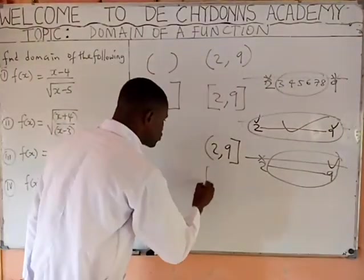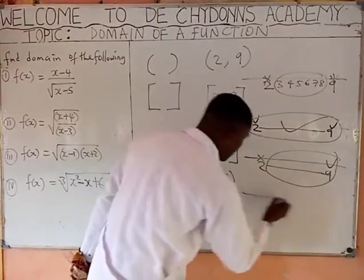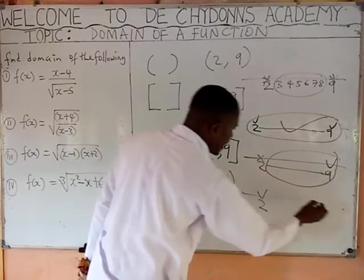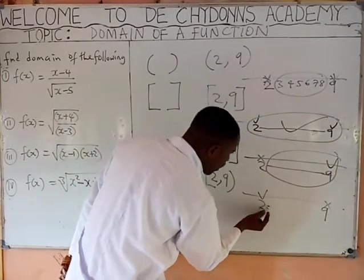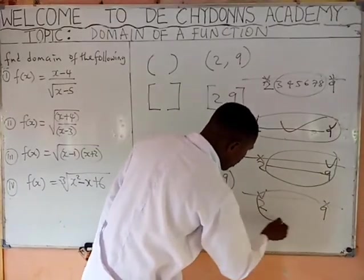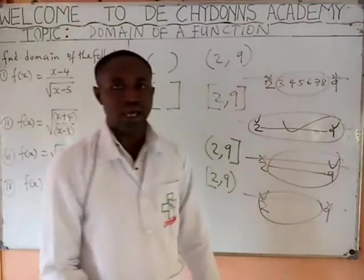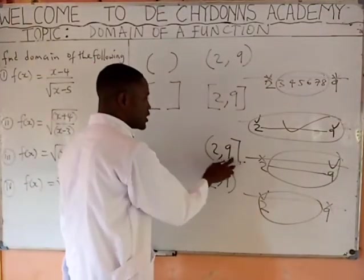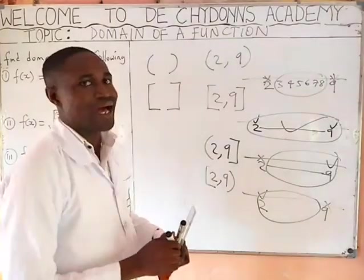Then when you have it as [2, 9) — closed on the left, open on the right — it means 2 is included but 9 is not included. So 2 and all numbers below 9 are included, but 9 is not. Mind you, when we deal with these brackets, be aware of what each one means.